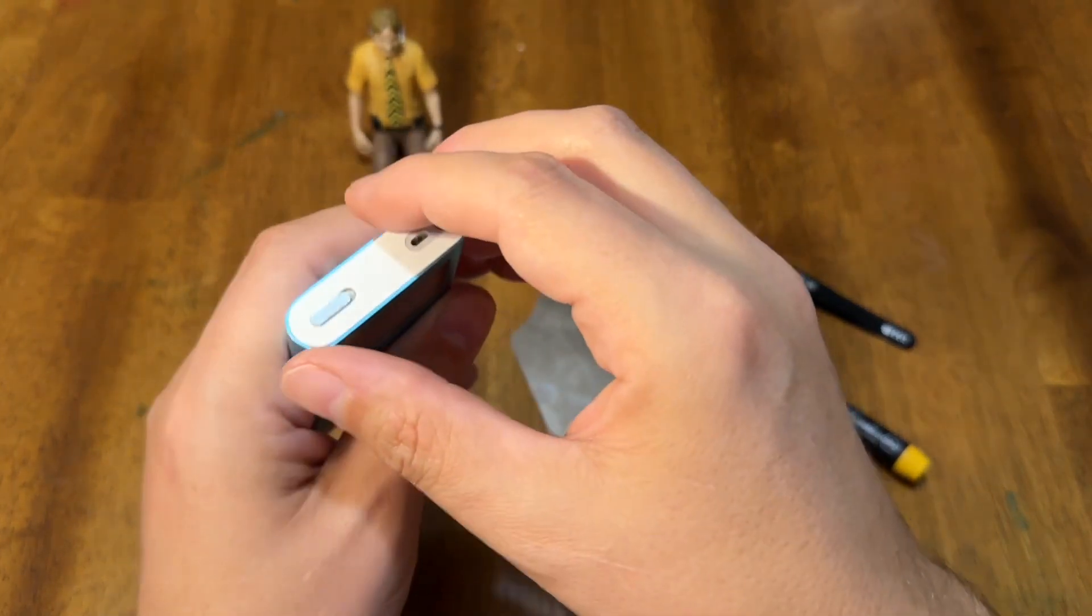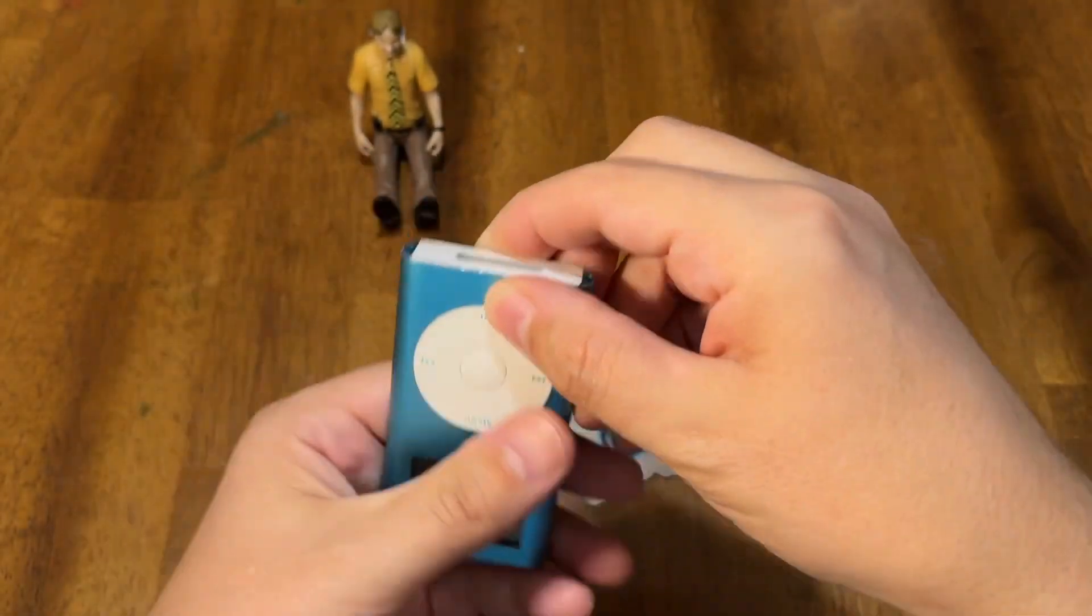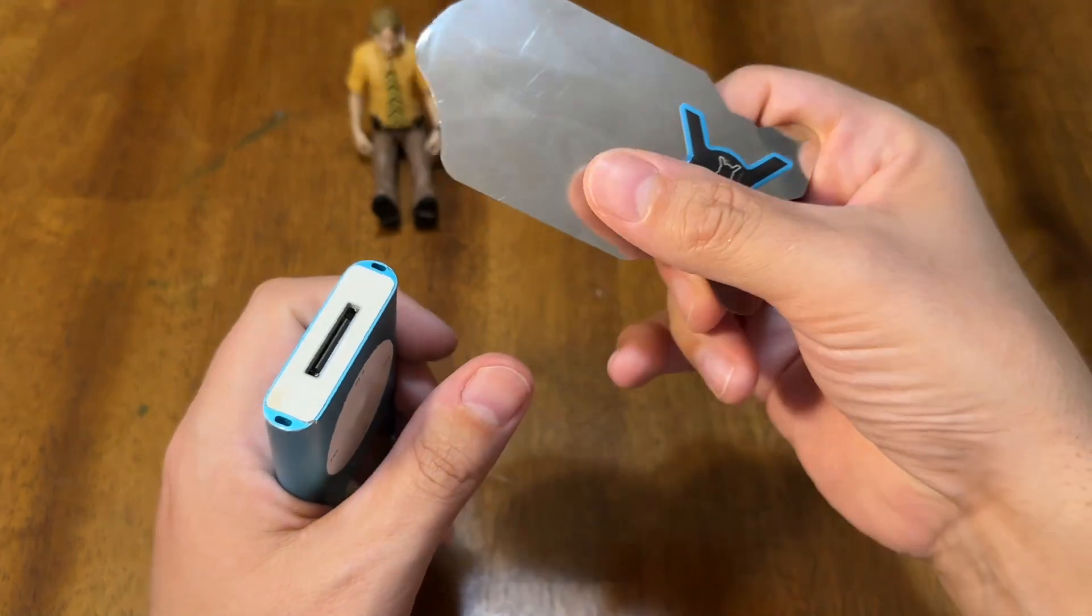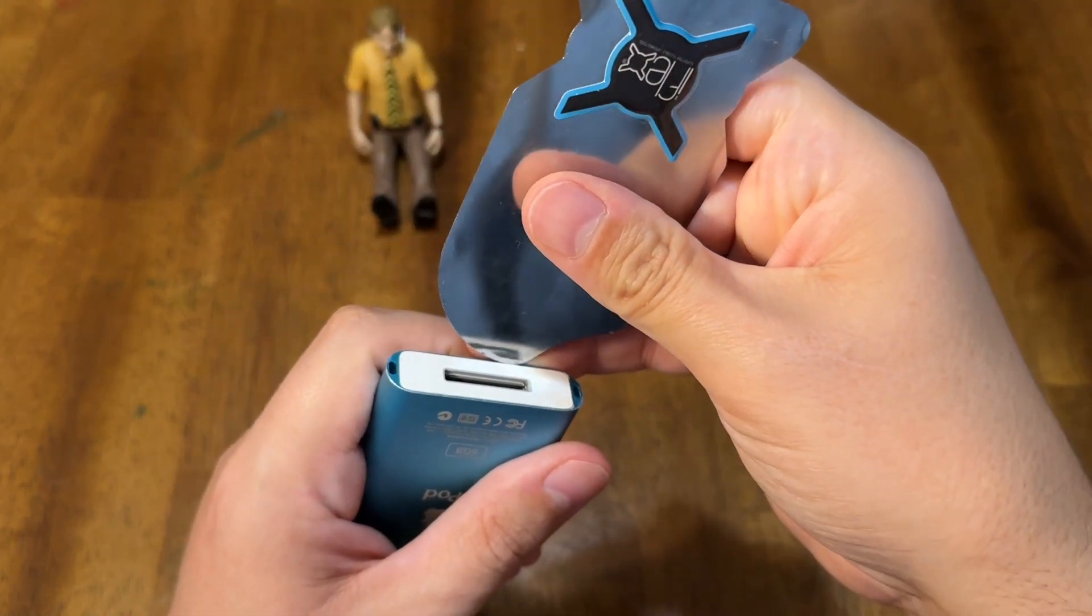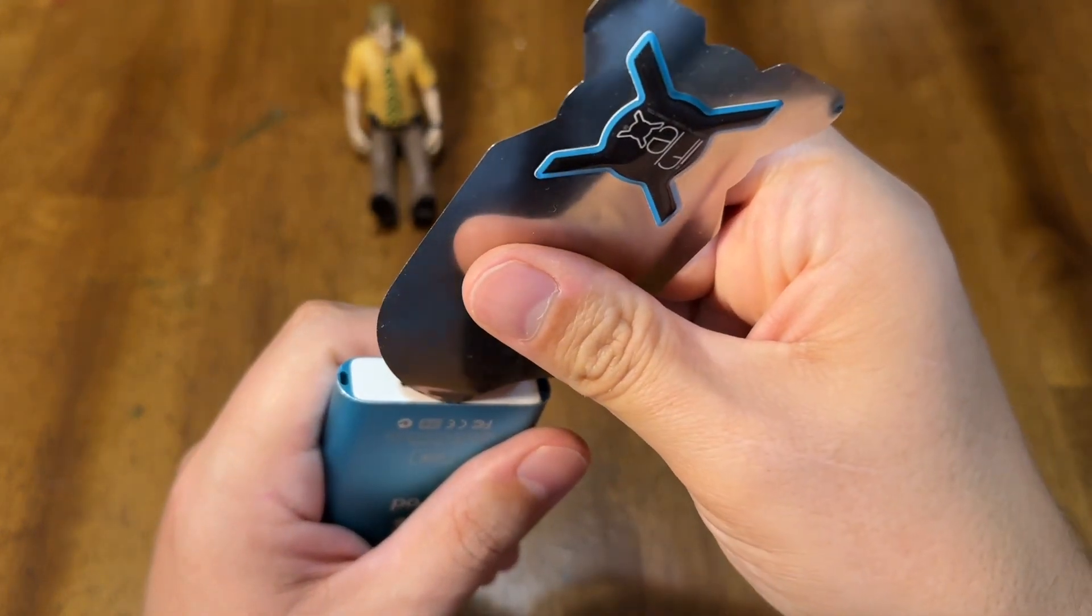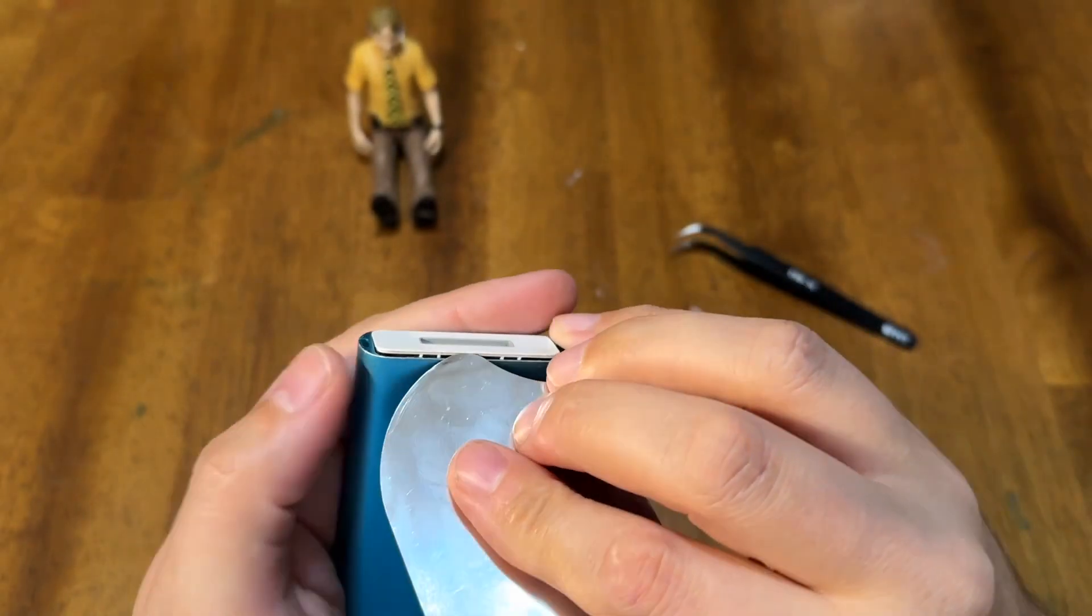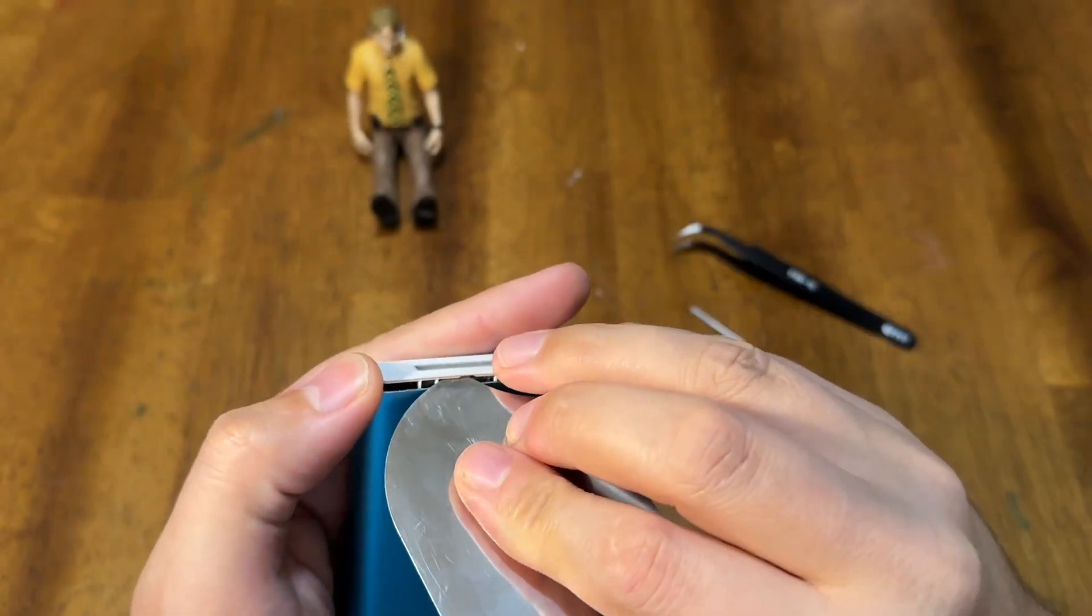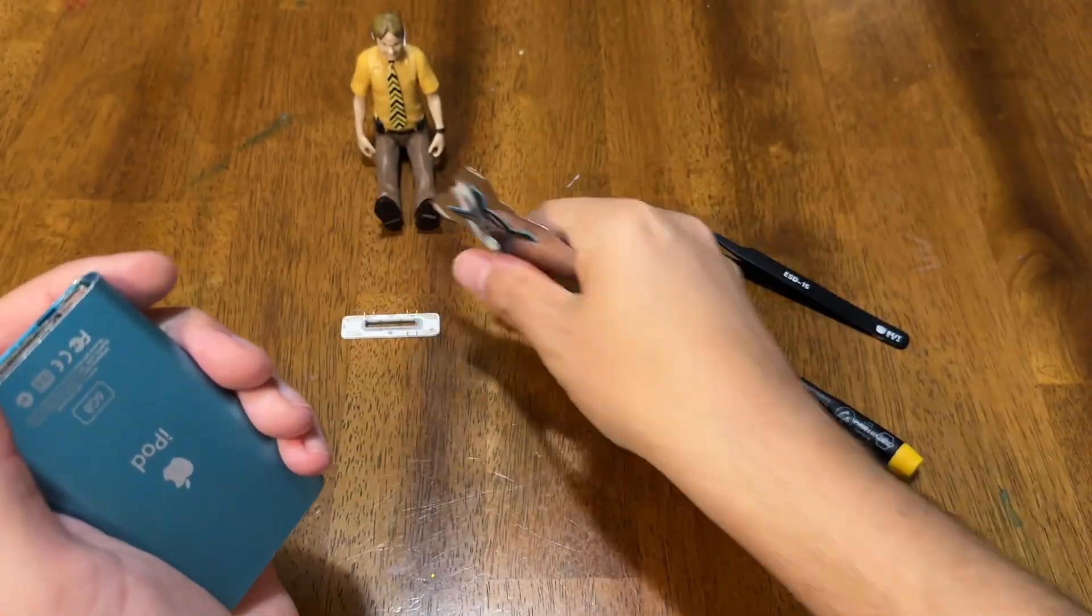So first thing you want to do, lock it, just in case it turns on for whatever reason. Then you're going to start at the bottom and use my little pry tool here. Get in between the case and the plastic cap and it just lifts off. Set that to the side.